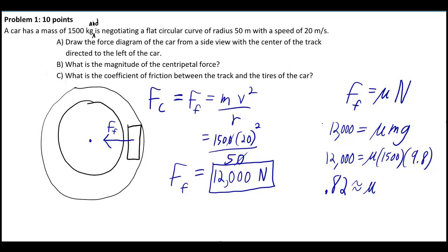To figure out the magnitude of this centripetal force, now we're on part B, you have to use mv² over r equals Fc, or Ff in this case, and then you just plug in and you get 12,000 newtons.